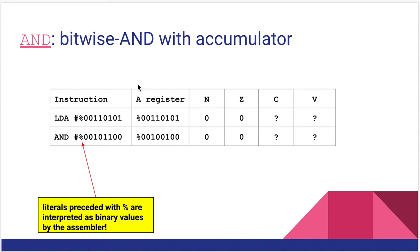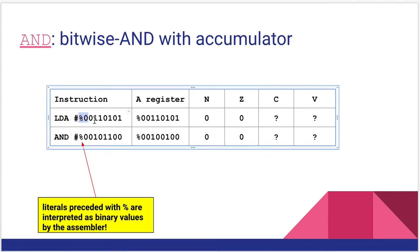Let's start with the AND instruction. It takes a single argument that is a byte, just like most things do, and it performs a bitwise AND with whatever's in the accumulator. In my example here I'm using the nomenclature for representing a binary constant in assembly: percent followed by the eight binary digits. It just makes it easier to see what we're doing with our bitwise manipulation.